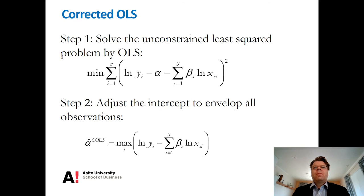Instead of imposing those sign constraints, we could also estimate the model alternatively by following two steps. We could first just simply apply ordinary least squares estimator to estimate the unconstrained problem. Simply fit these parameters, alpha and beta, to the center of the cloud of data. Subsequently, then we can find the largest residual and we can then specify this intercept term such that we envelop all of the observations. This can be called the corrected OLS or COLS.